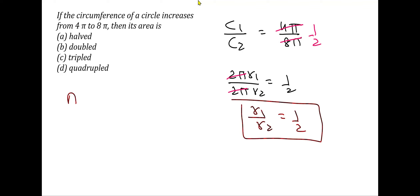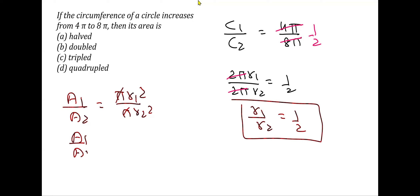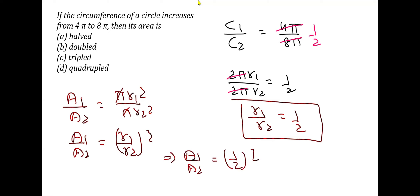The ratio of radii is 1 over 2. The area ratio A1 over A2 equals pi r1 squared over pi r2 squared. Pi cancels, giving A1 over A2 equals (r1 over r2) squared. Substituting 1 over 2, we get (1 over 2) squared equals 1 over 4. So the ratio is 1 to 4 — the area is quadrupled, which matches the correct option.